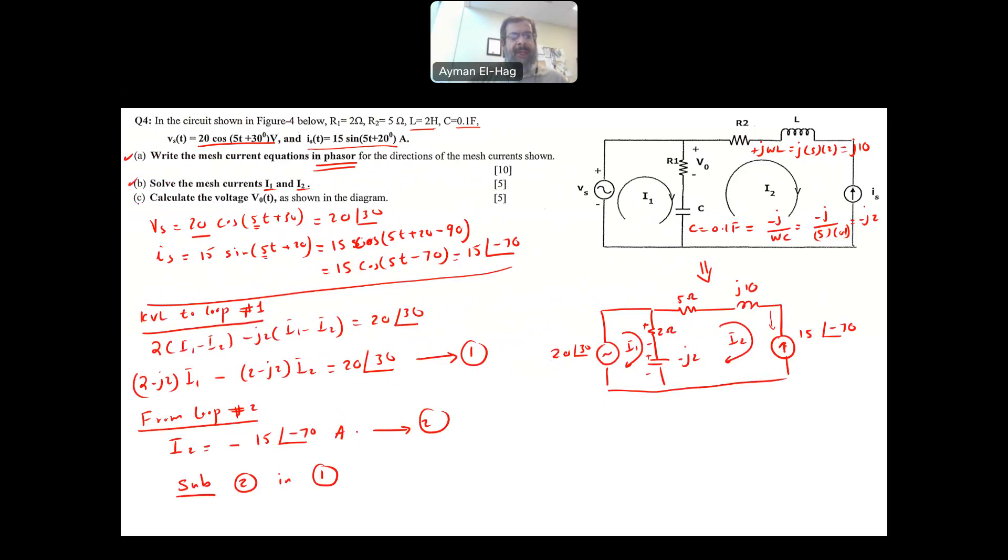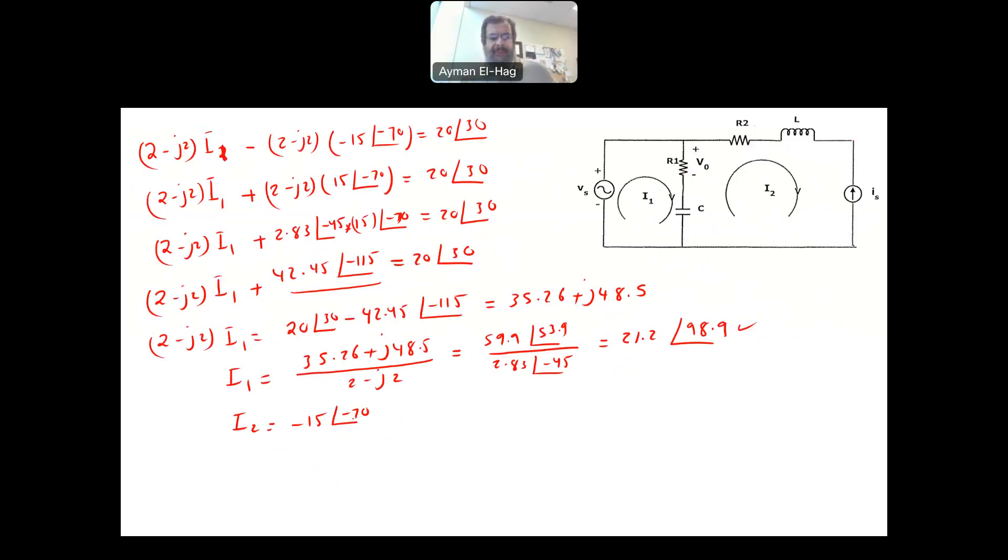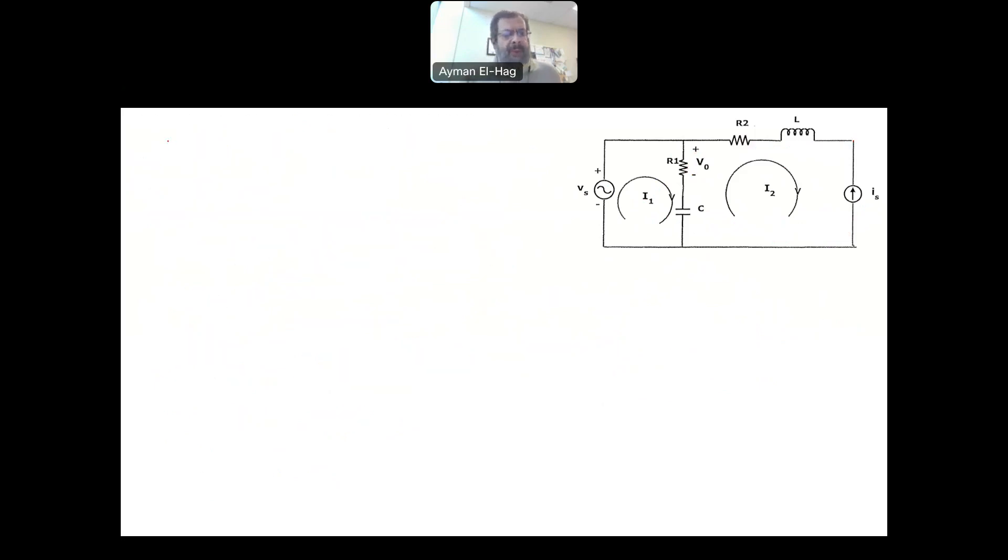So now we finished part A and part B, and we want to find part C, which is V naught here, and we want it to be in the time domain. So V naught, we need to solve for V naught. First, we'll use V naught as a phasor. It's basically equal to R1, which is the 2 ohms, times I1 minus I2, because I1 is going with the polarity specified for V0 and I2 is against this polarity. So now we know the value of everything.